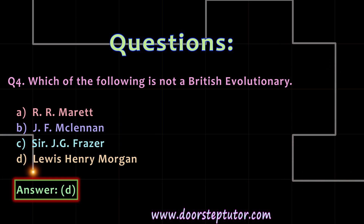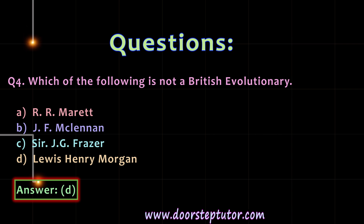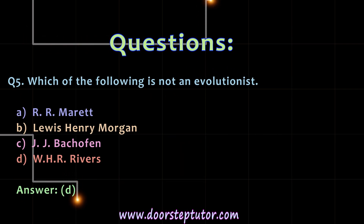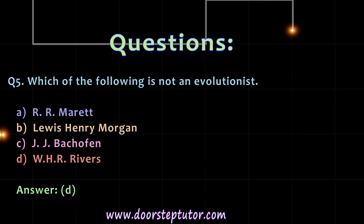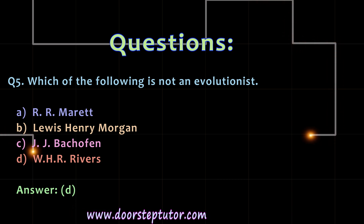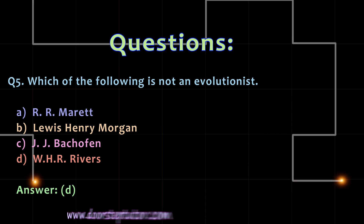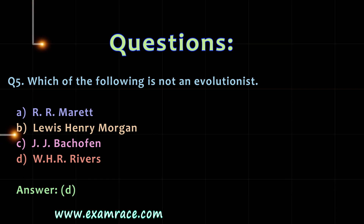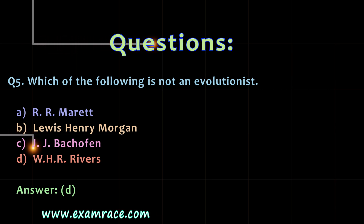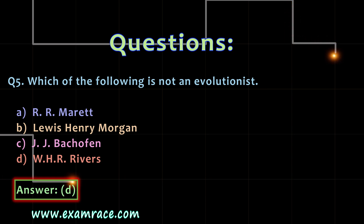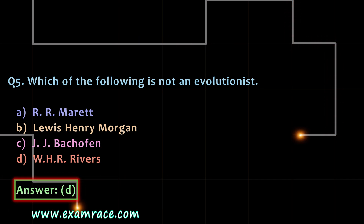The last and fifth question: which of the following is not an evolutionist? A. R.R. Marriott. B. Lewis Henry Morgan. C. J.J. Bachofen. D. W.H.R. Rivers. The correct answer is W.H.R. Rivers.